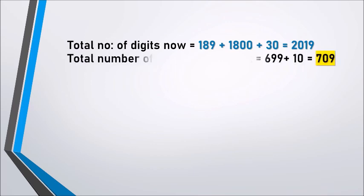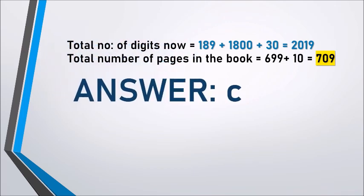Therefore, the total number of pages in the book is equal to 699 + 10 = 709. The right answer to the question is option C.